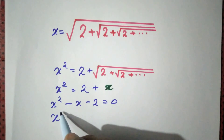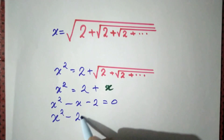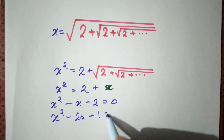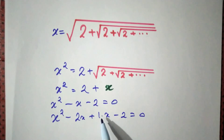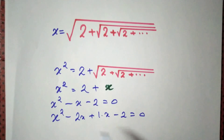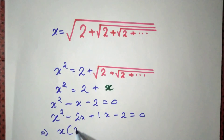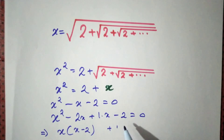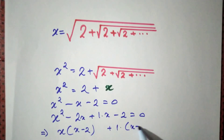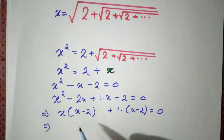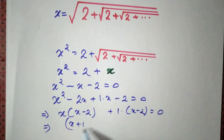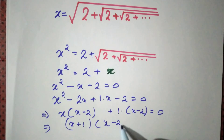Let's solve by factorization method: x squared minus 2x plus 1x minus 2 equals 0. We need the product equal to minus 2 — minus 2 into 1 is minus 2, and minus 2 plus 1 is minus 1. That gives x times (x minus 2) plus 1 times (x minus 2), which implies (x plus 1)(x minus 2) equals 0.